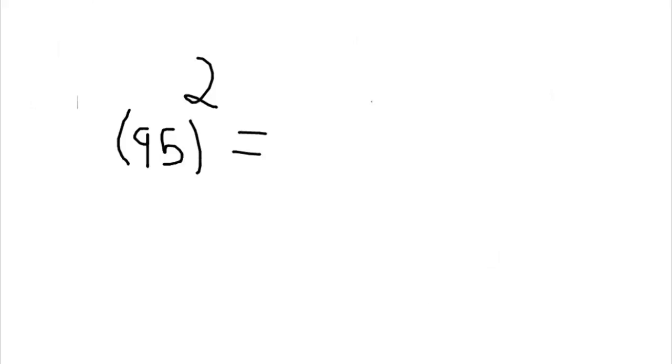Now this number looks very big, and if anyone asks you to find out the square of this number without using pen or calculator it will be quite hard. But by using this shortcut method you can find it out within a fraction of a second. So here also there are only two steps - we just have to put 25 as the last two digits, and we have to find out what will be here in the first place.